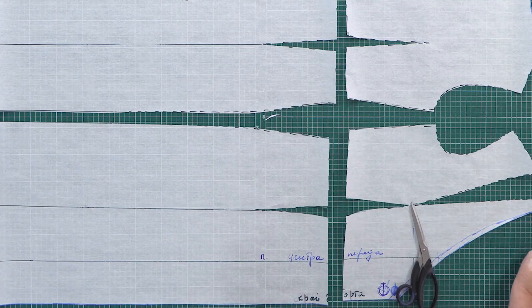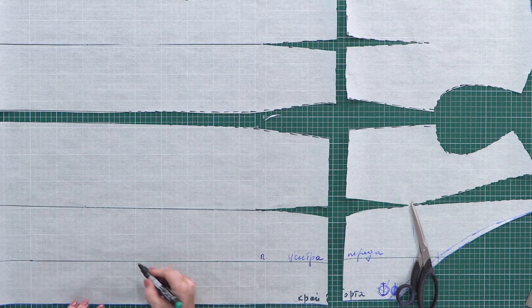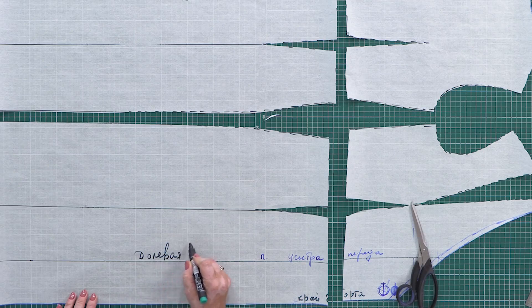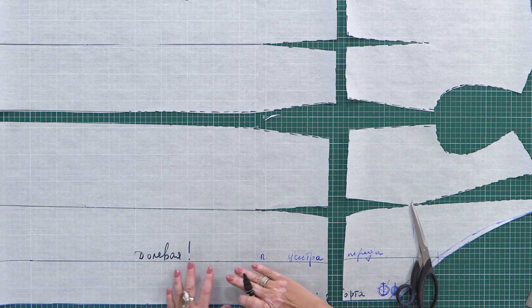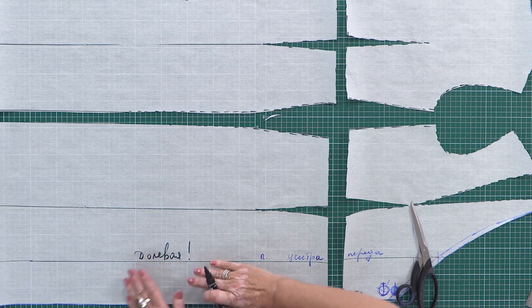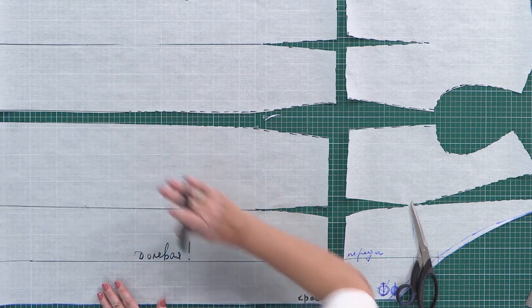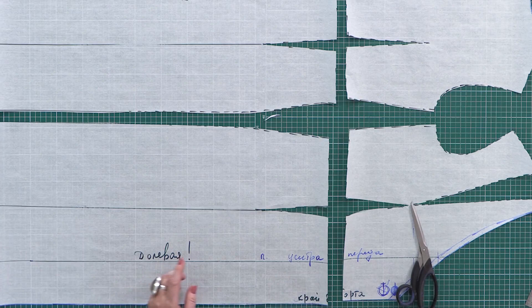Be very attentive. The center front should be cut on the lengthwise grain. It is very important. The detail will be flared to the side. It is a must for the center front to be cut on the lengthwise grain.